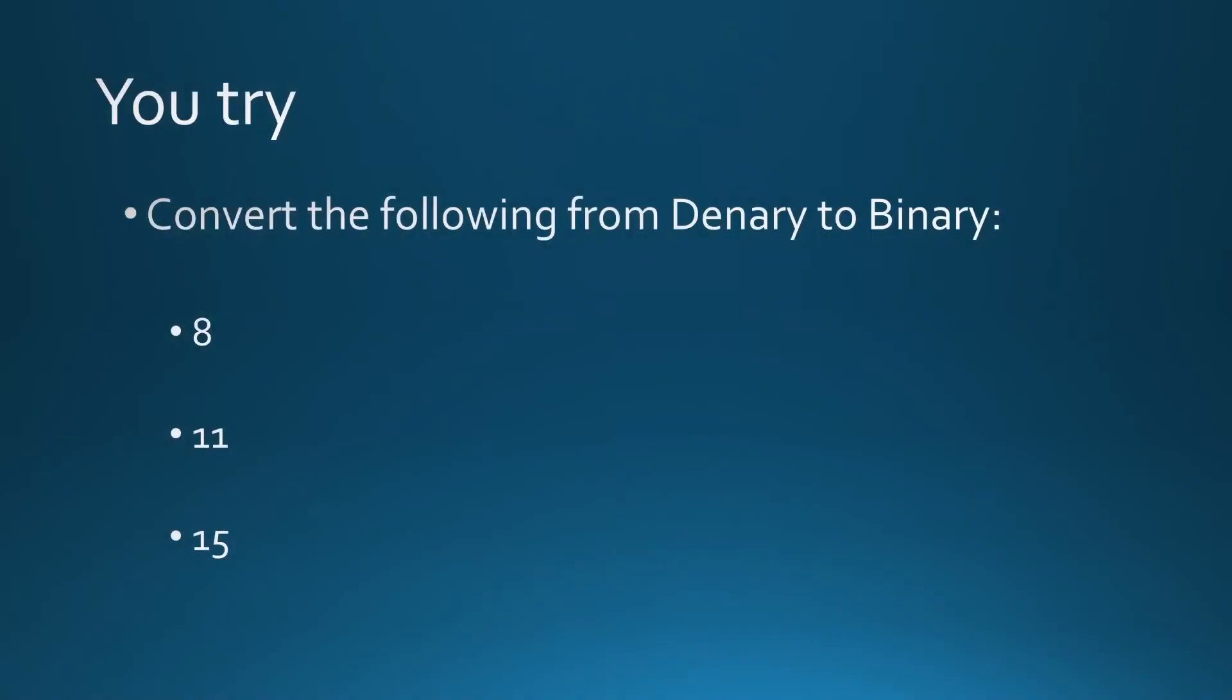Now you need to have a go at this. You need to pause this and have a go at it. So before you do that, you're going to invert these numbers from denary to binary. So I'll tell you right now, you're only going to need maximum 4 columns: the 1s, the 2s, the 4s, and the 8s.